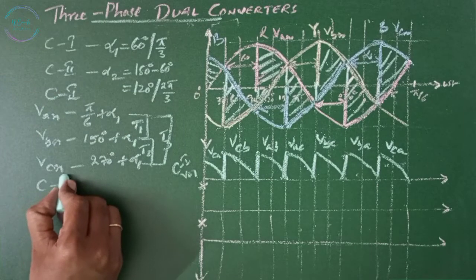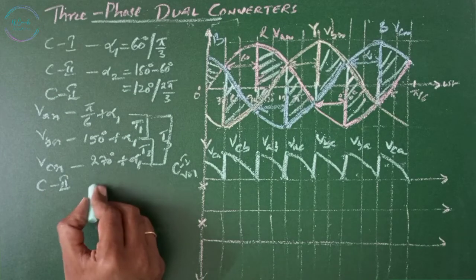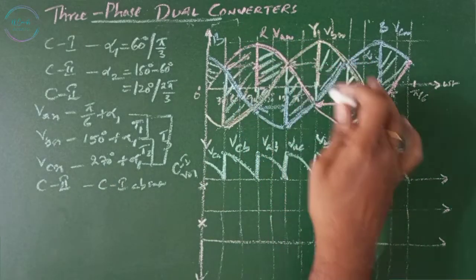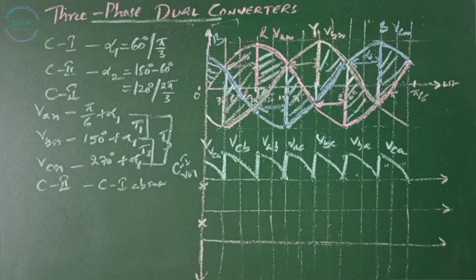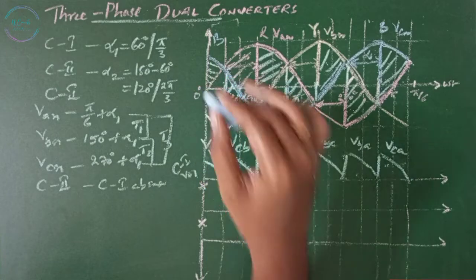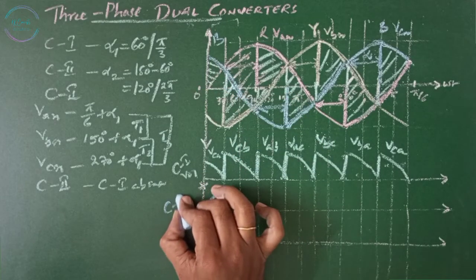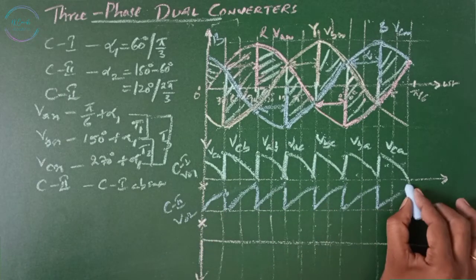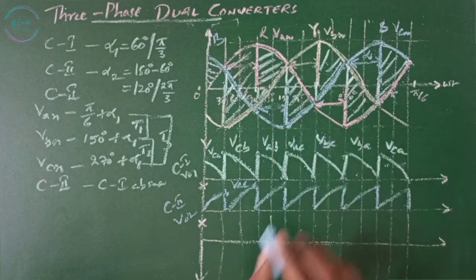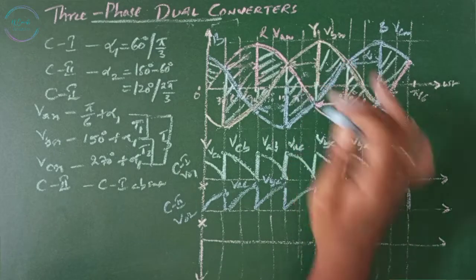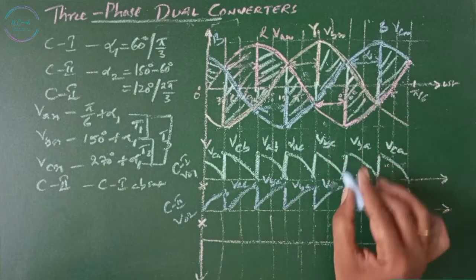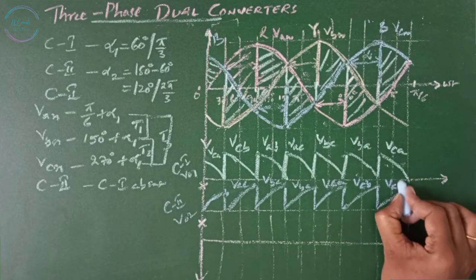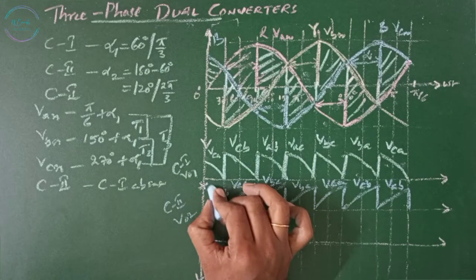Converter 2 contains the area where converter 1 is absent — the remaining empty spaces will be converter 2's output V02. Tracking that gives: VAC, VBC, VBA, VCA, VCB, VAB, and the remaining part follows as VAB.